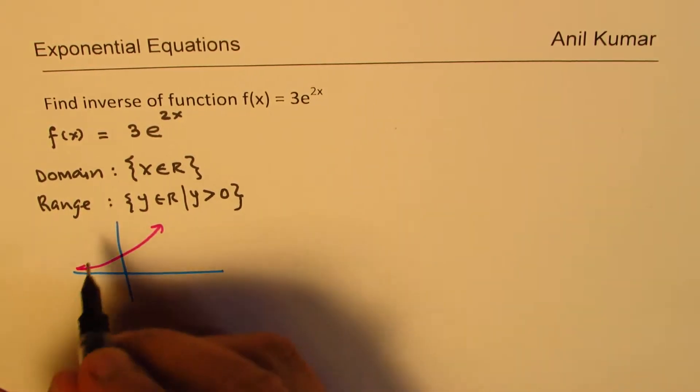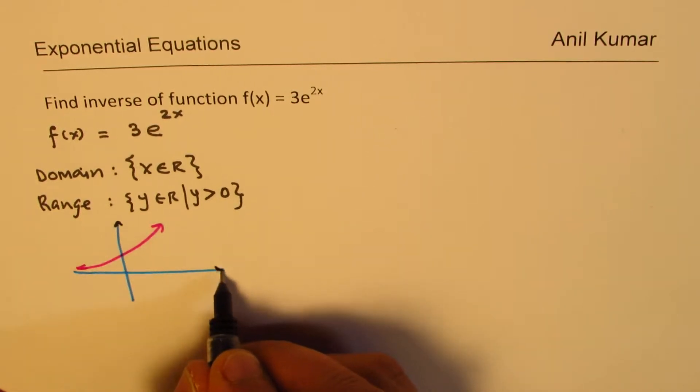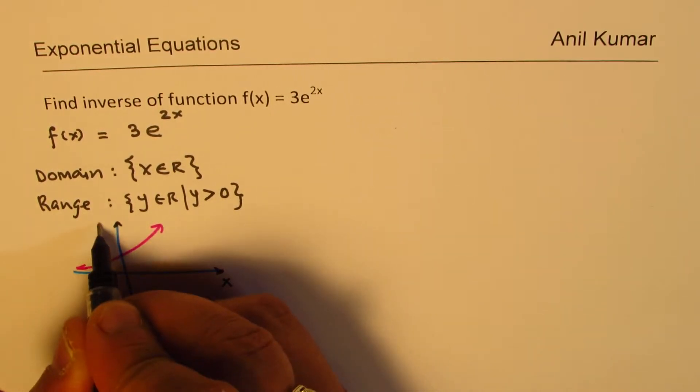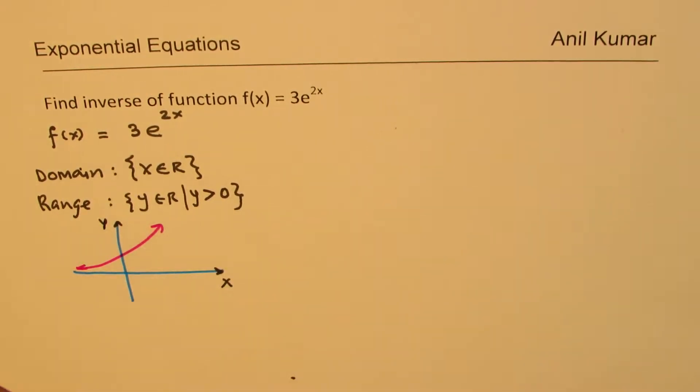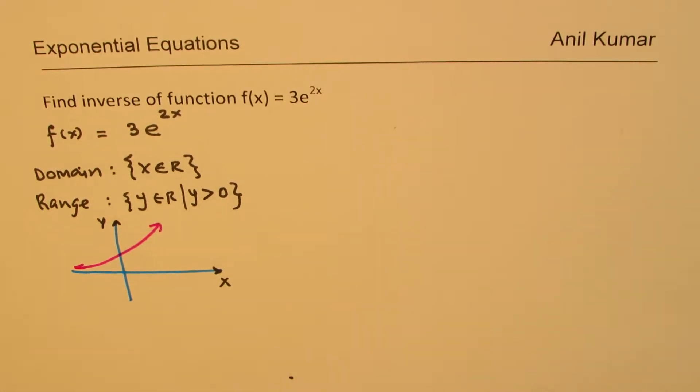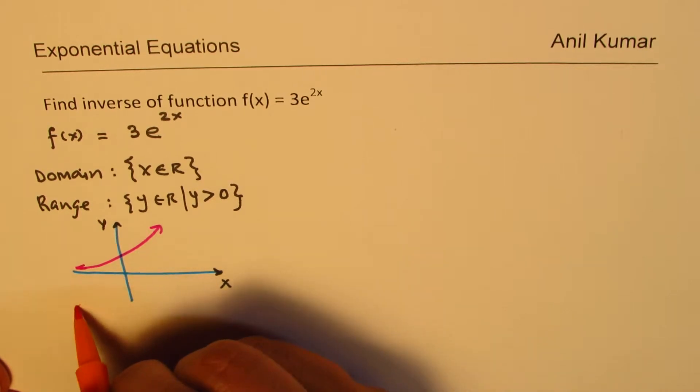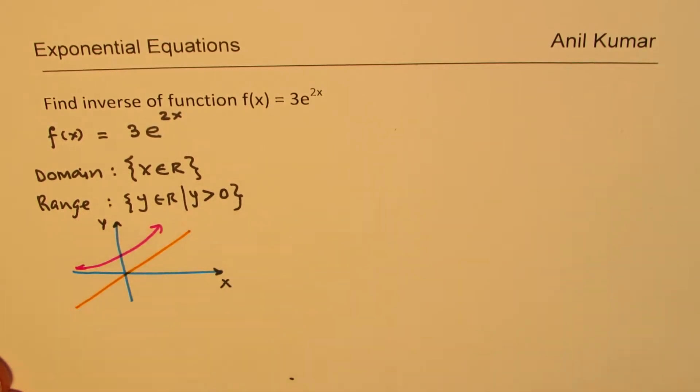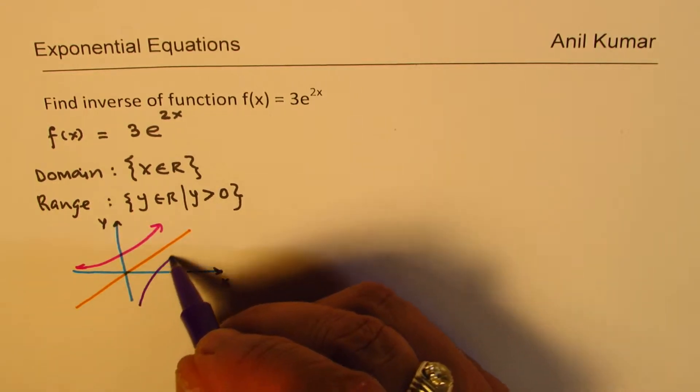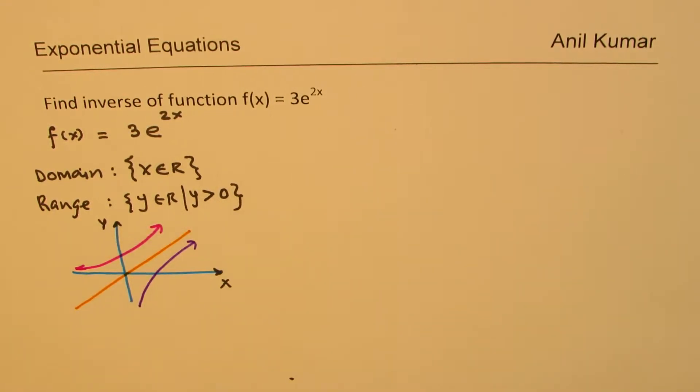Now, we'll find the inverse of this particular function. Inverse of the function, as you know, will be reflection on the line y equals x. So, if I have a line like this, it is going to be reflected on this line and we expect something like this as the inverse of the function.